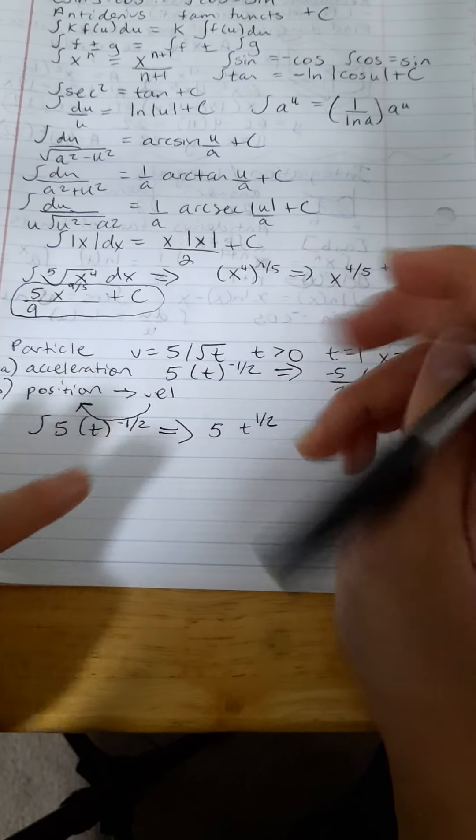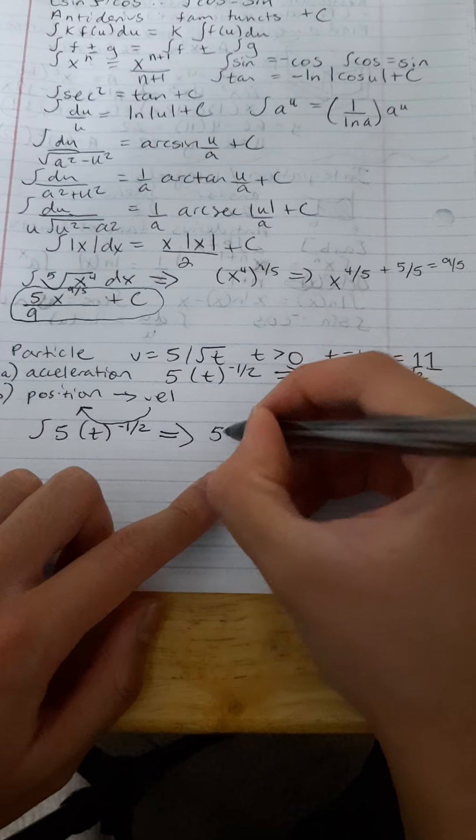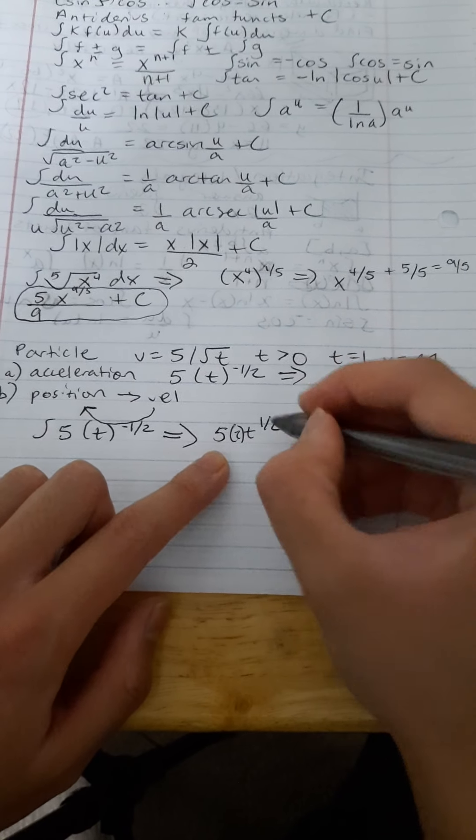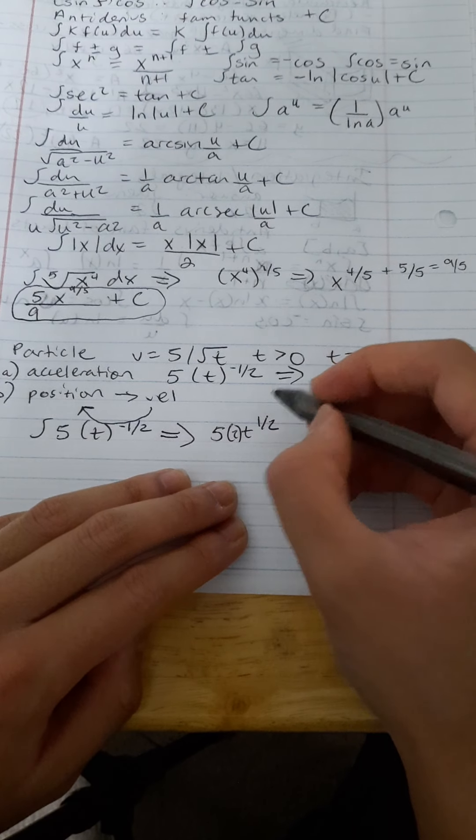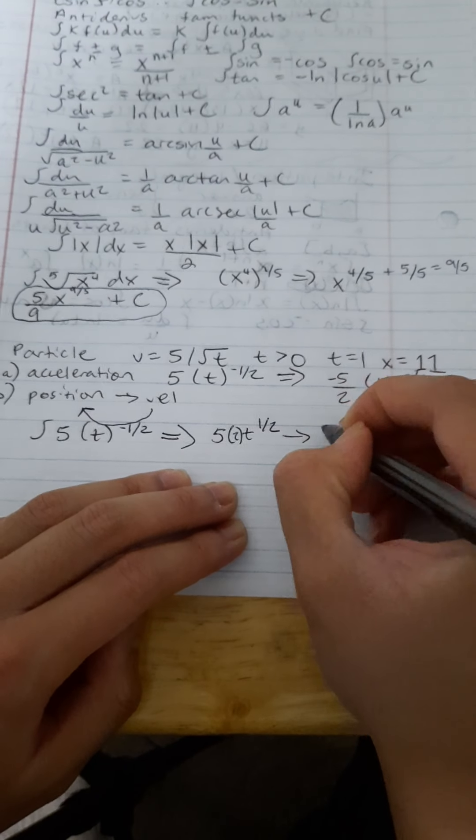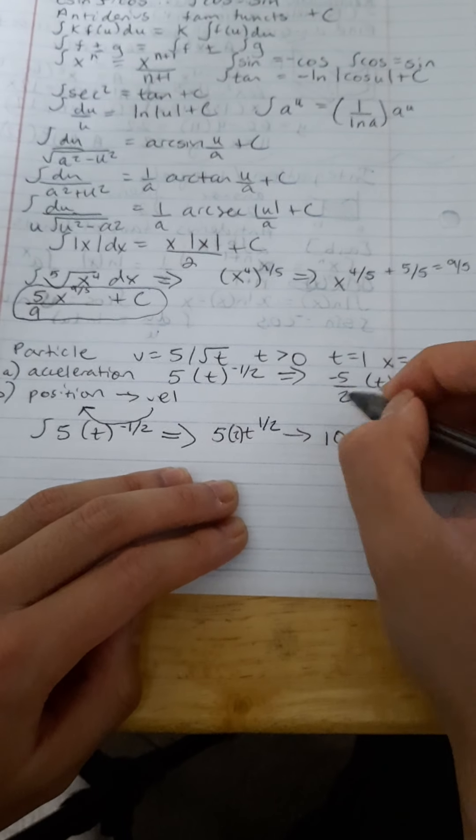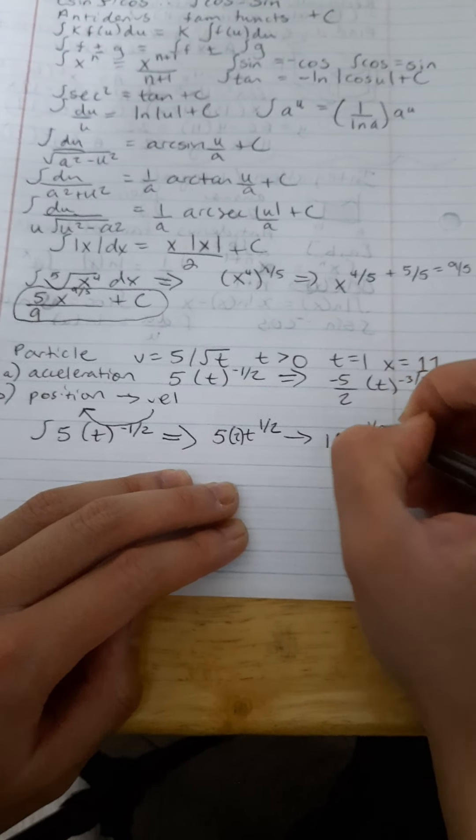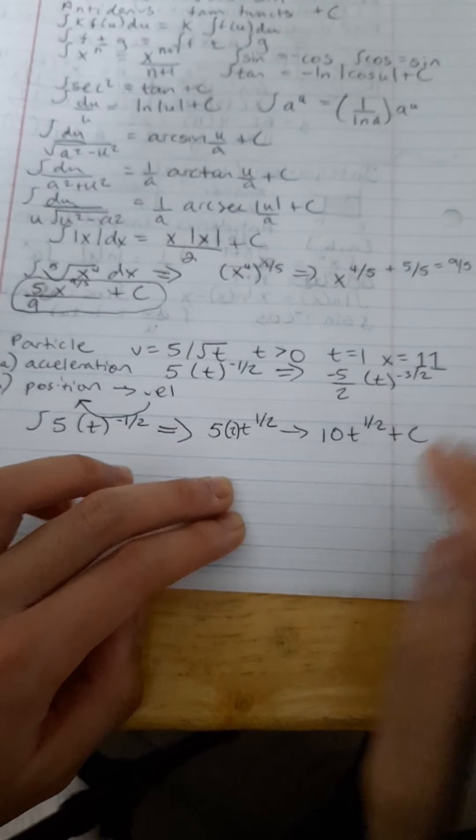and then we're going to actually divide by 1/2. So, when we divide by 1/2, we're actually multiplying it by 2. So, this would actually be 10 times t to the 1/2 plus c.